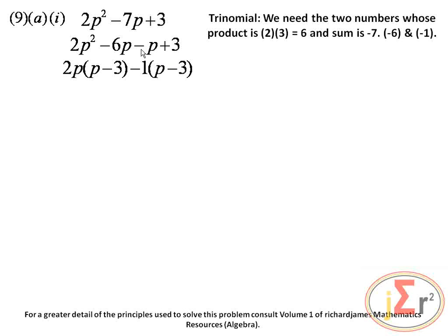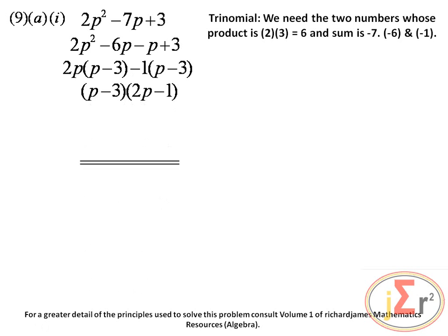As a rule, the sign that begins the second pair is used as the sign of the common factor. The second pair is negative p plus 3, which begins with a negative sign. Since there is no obvious common factor of p and 3, we use 1, so the common factor is negative 1. Negative 1 into negative p gives positive p, and negative 1 into 3 gives negative 3.